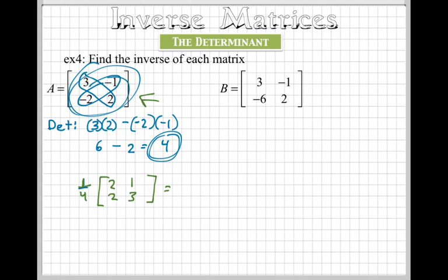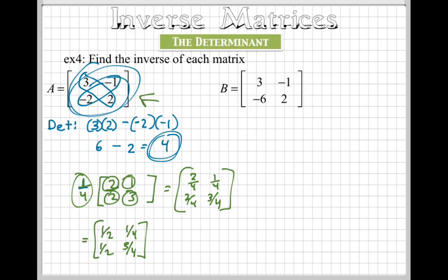So then we just take this one over four and we multiply it to each of the numbers inside, which is known as scalar multiplication. So we get two over four, and then one over four, two over four, and then three over four. This would simplify to one-half, one-half, and then one-fourth and three over four. And this is the inverse matrix for the first matrix, for matrix A.